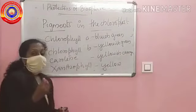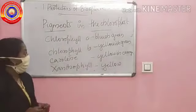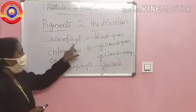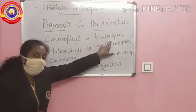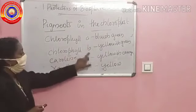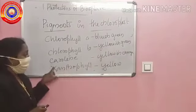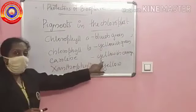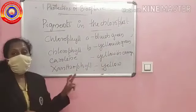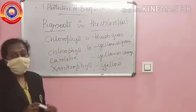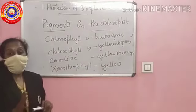So the pigments present in the chloroplast are: chlorophyll A which shows bluish green in colour, chlorophyll B yellowish green, carotene yellowish orange, and xanthophyll yellow in colour. This you have to write in the notebook.